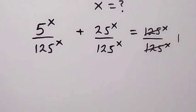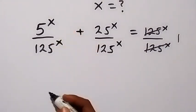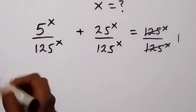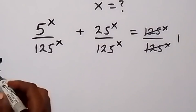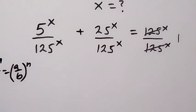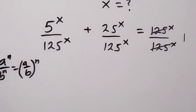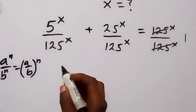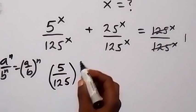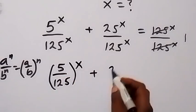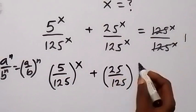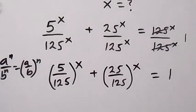Then what we have on this side: from the law of indices, when we have a raised to power n over b raised to power n, we can write it as (a over b) raised to power n. So when we apply this here, this will give us 5 over 125 raised to the power x, then plus 25 over 125 raised to the power x, and that equals 1.